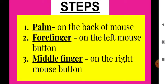To summarize the steps: first, keep your palm on the back of the mouse. Second, keep your index finger on the left mouse button. Third, keep your middle finger on the right mouse button. By following these steps, you will understand how to hold the mouse and use it the correct way.